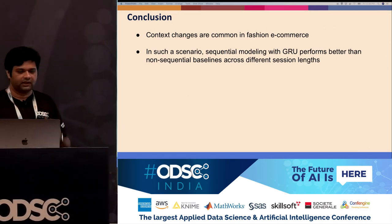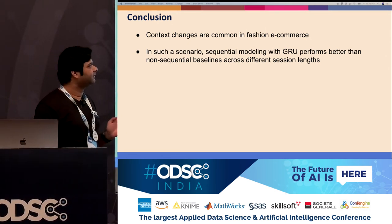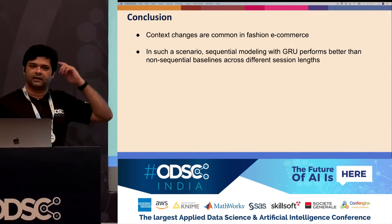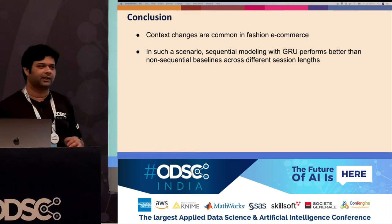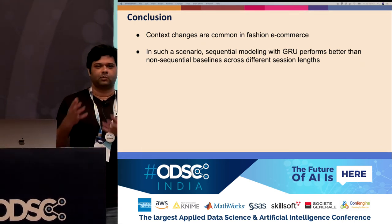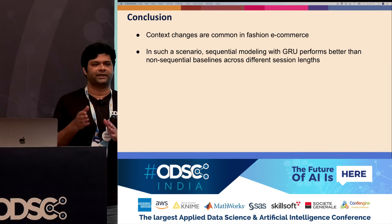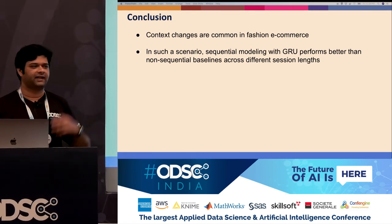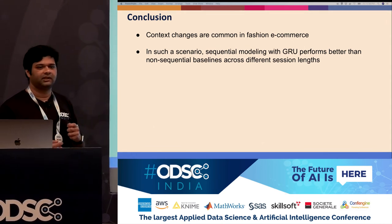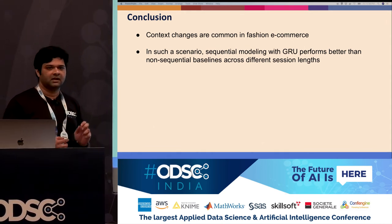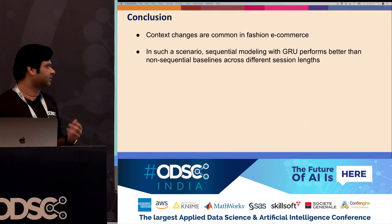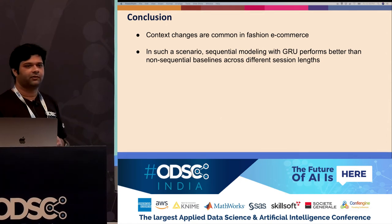To conclude: context changes are common in fashion e-commerce, and even beyond fashion, in any domain where users browse products, it's very unlikely the user has a very specific product in mind — they may do a lot of switches. In all those cases you could look at similar approaches. In such scenarios, sequential modeling with GRU performs better. That's what we observed.